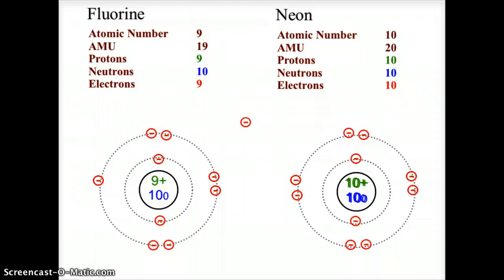When we get to neon, neon is a noble gas. Noble gases are the most stable elements on the periodic table, and what makes them stable is that their outer shell is full and complete. With atomic number 10 and AMU of 20, we have 10 protons and 10 neutrons — represented as 10+ and 10 zero in the nucleus. Placing 10 electrons gives 2 in the first orbital and 8 in the second, making that second orbital full and neon stable.